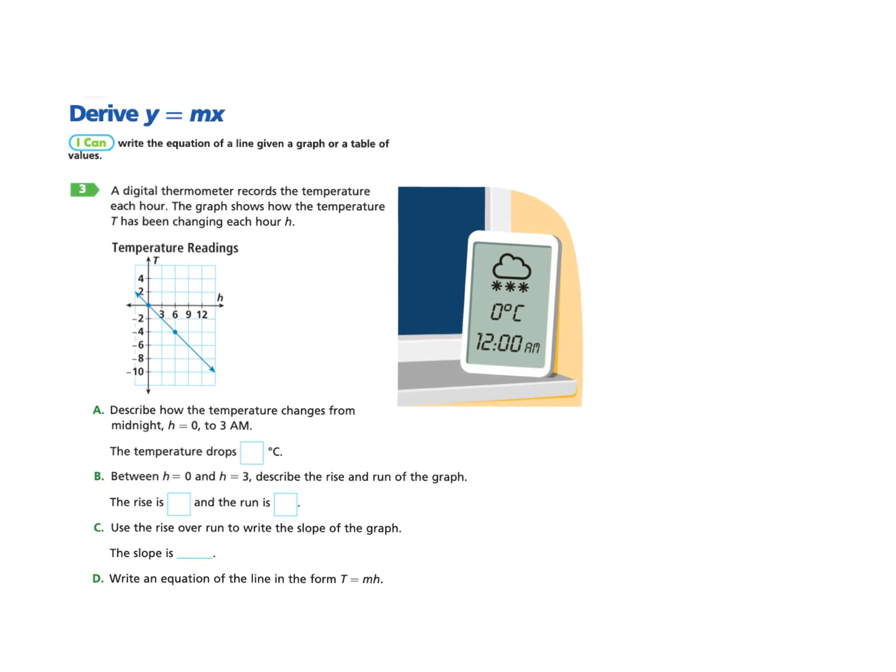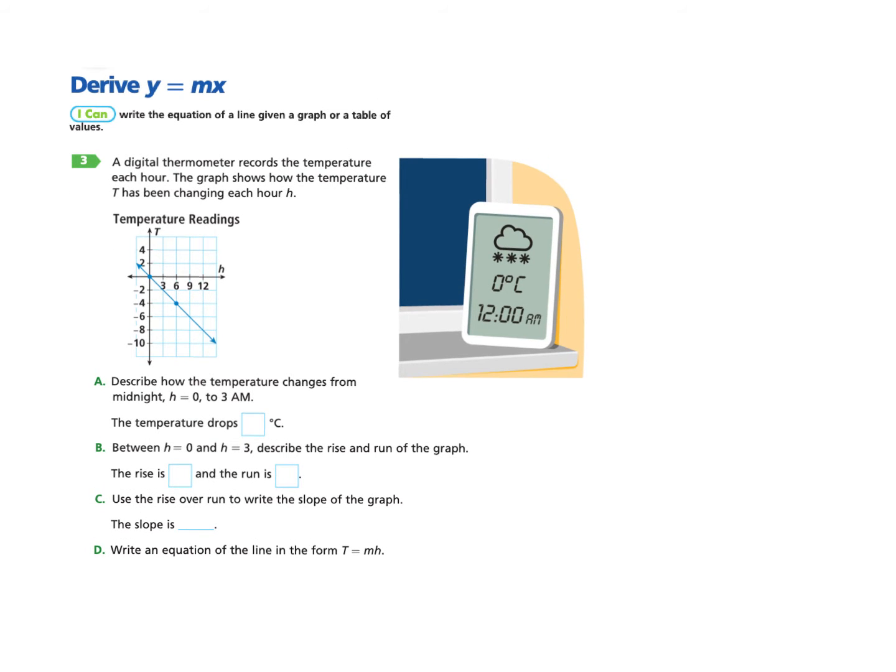Let's jump in and look at an example of doing this. So let's just take a second and read what the question is about here. We have a digital thermometer recording the temperature each hour, and the graph shows how the temperature T has been changing each hour H. Really important you just stop and think about here, the vertical axis is T, the horizontal axis is H. So normally where we would have a Y, we have a T, and where we would have an X, we have an H. And that's of course fine, but it's important to remember that relationship in terms of the title of our section and how we're doing things.